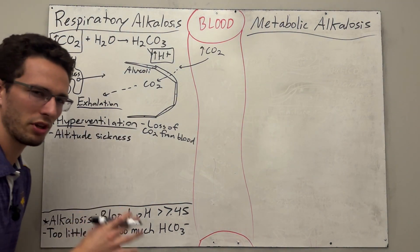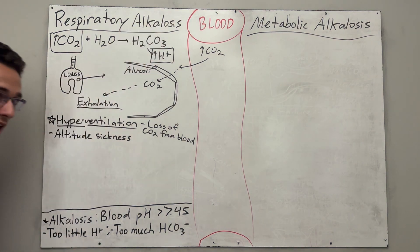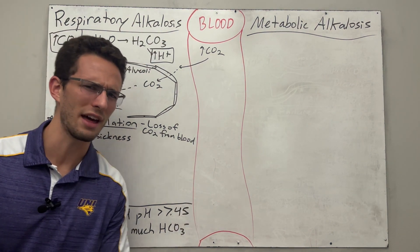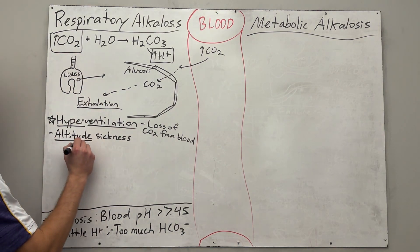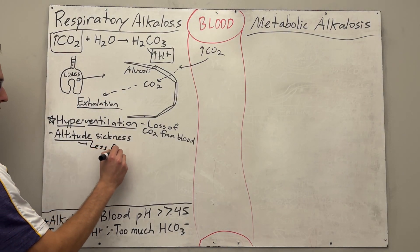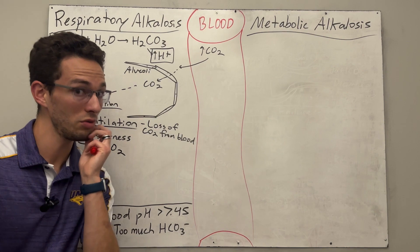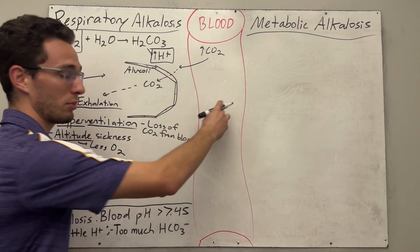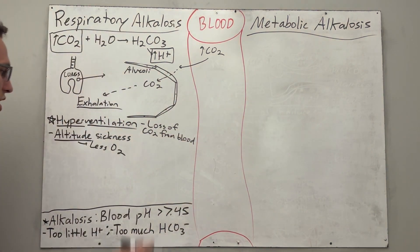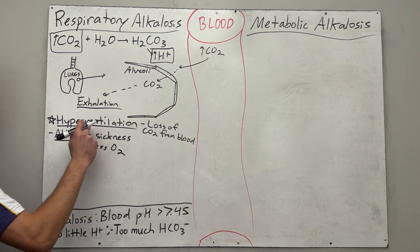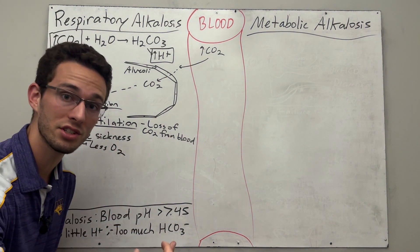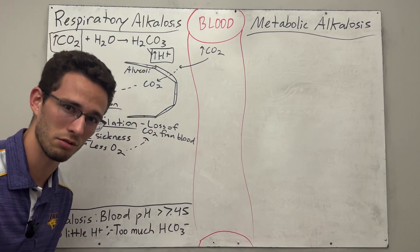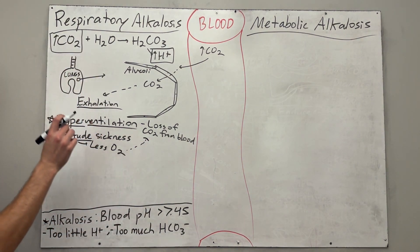Altitude sickness is when your blood becomes really alkaline because you begin breathing at a rapid rate at altitude. Why would you do that? Well, at altitude there will be less oxygen. So to compensate, you need to breathe in a lot more to get oxygen into your blood to feed your cells and make energy. So if there's less oxygen, you've got to increase your respiratory rate, but in the process you will lose more CO₂. That causes your blood to become alkaline.